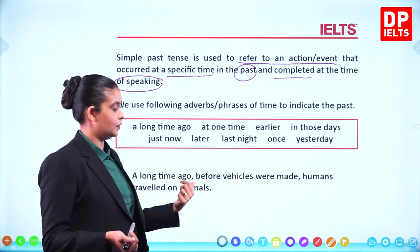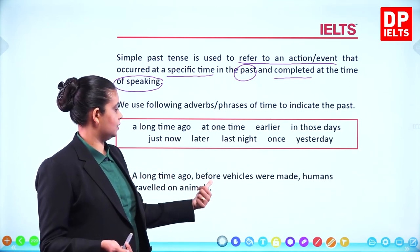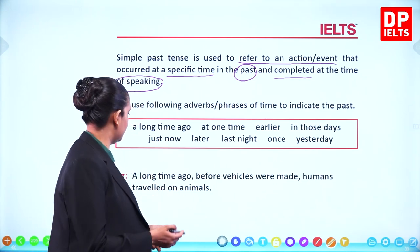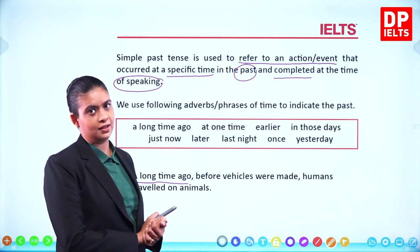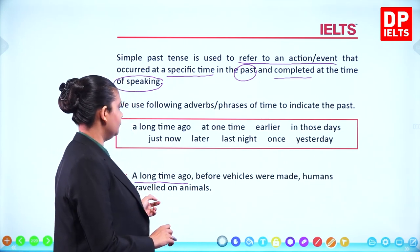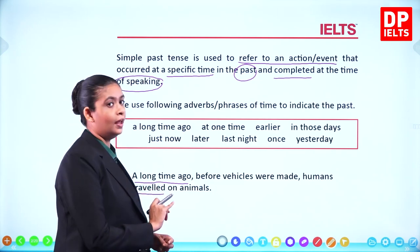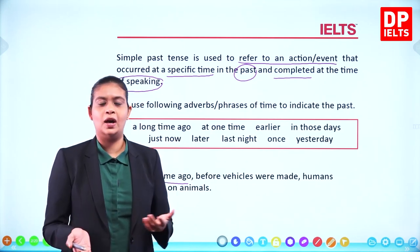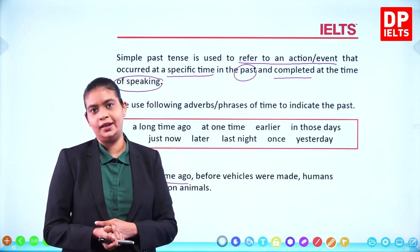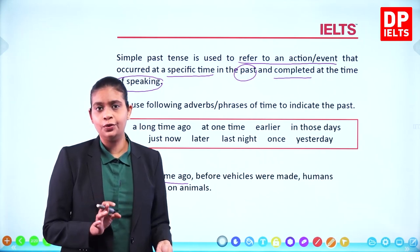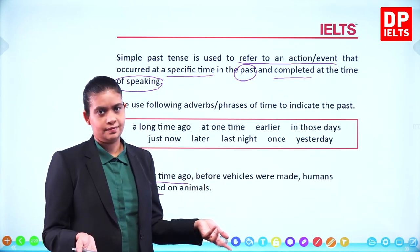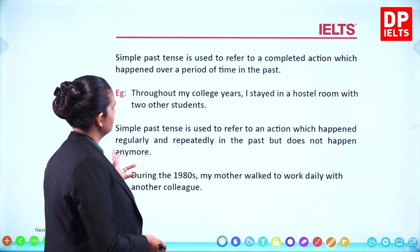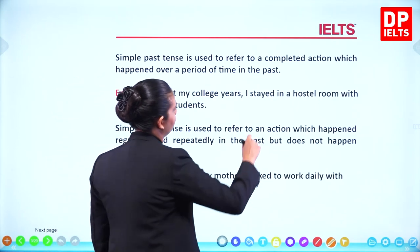Example: 'A long time ago, before vehicles were made, humans traveled on animals.' Here the phrase 'a long time ago' is given and the verb is 'traveled.' In the past tense, the verb form ends in D — either ED or just D — depending on the spelling rule.